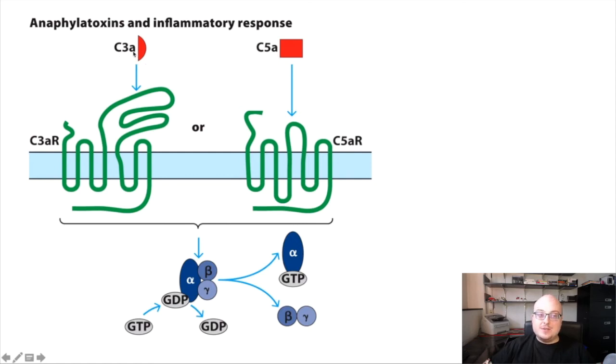So the anaphylatoxins that we'll focus on are C3A and C5A. It's a little easy to associate the A molecules with inflammation because anaphylatoxin starts with A if that helps. But C3A and C5A, I keep saying they float away. Well, they float away and they actually bind to receptors on the surface of other cells. So the receptor for C3A is the C3A receptor, C3AR, or there's a C5A receptor, not surprisingly.